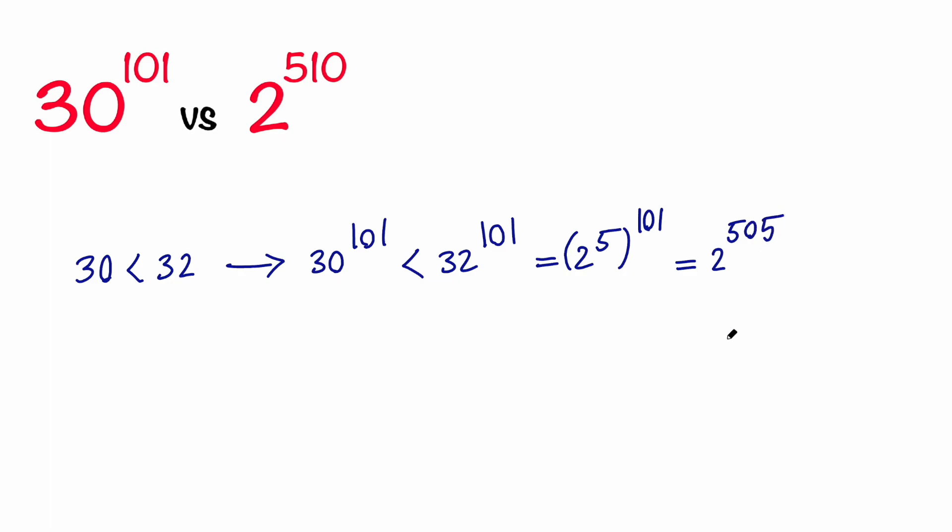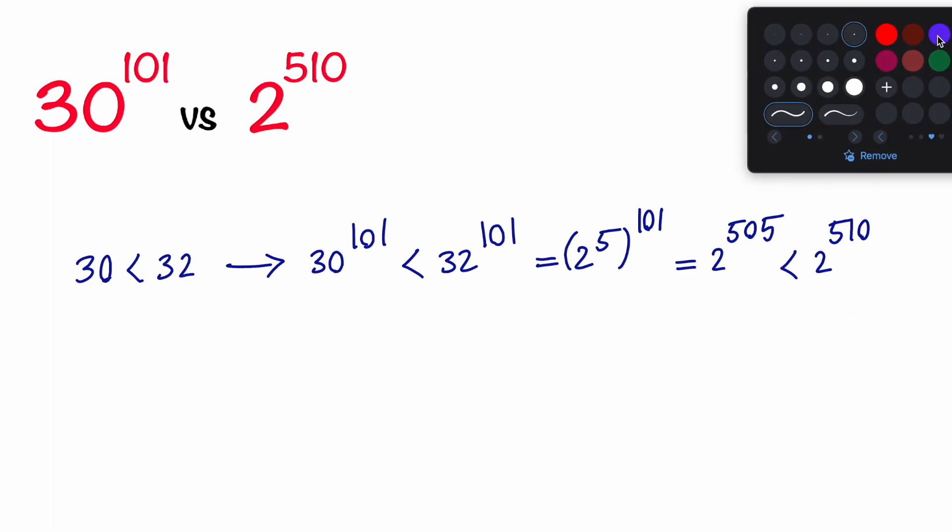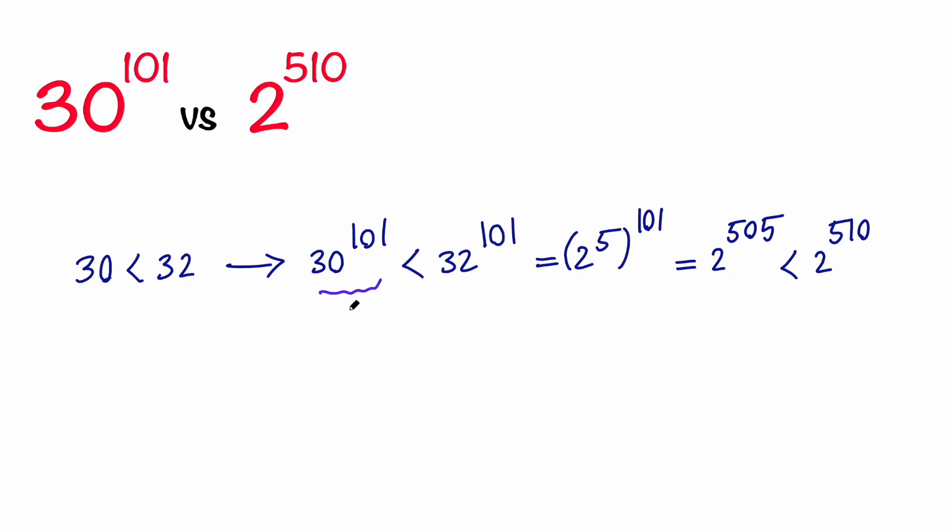And it is obvious that 2 to the power of 505 is less than 2 to the power of 510. So based on the transitive property, I can go ahead and say that this number is less than this number. So 2 to the power of 510 is the larger one.